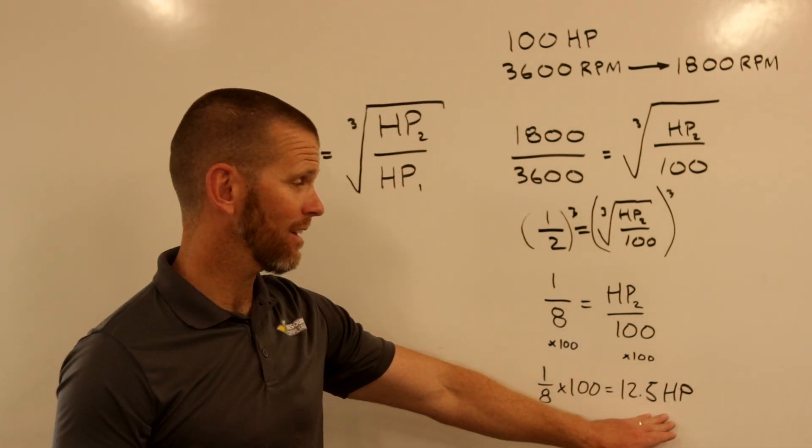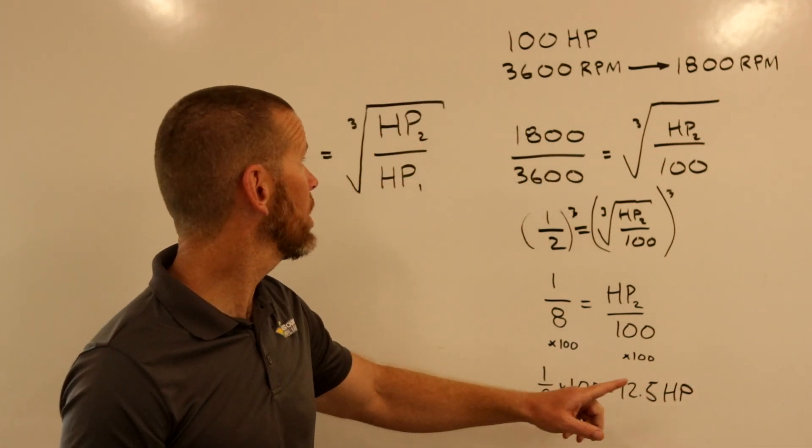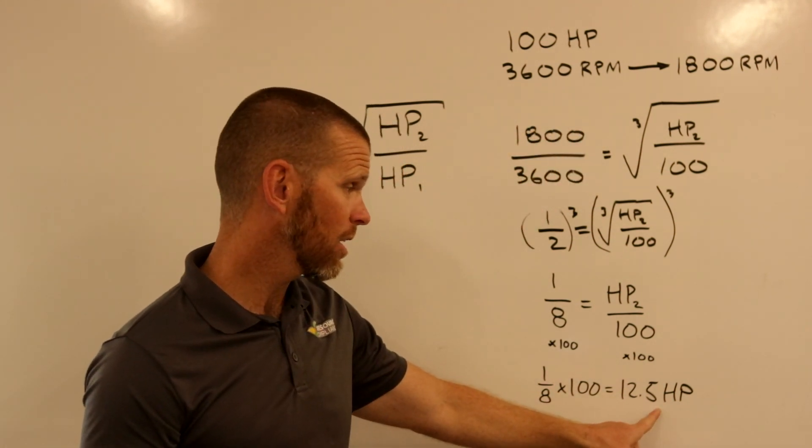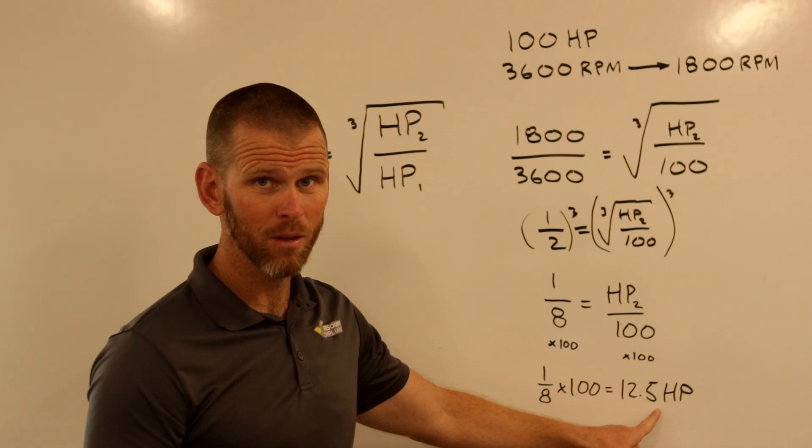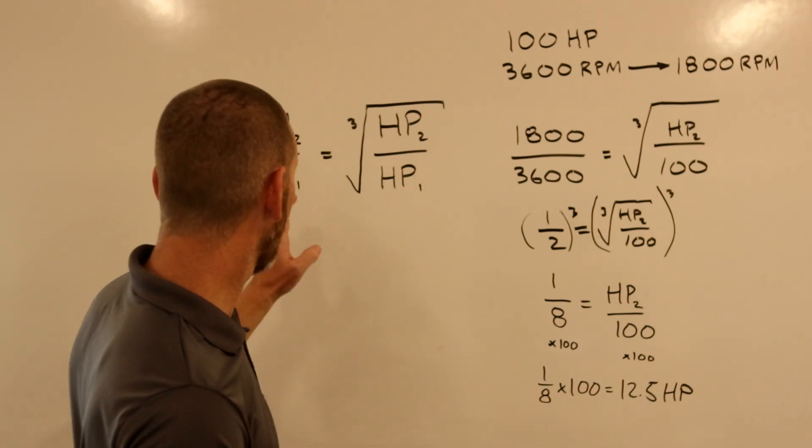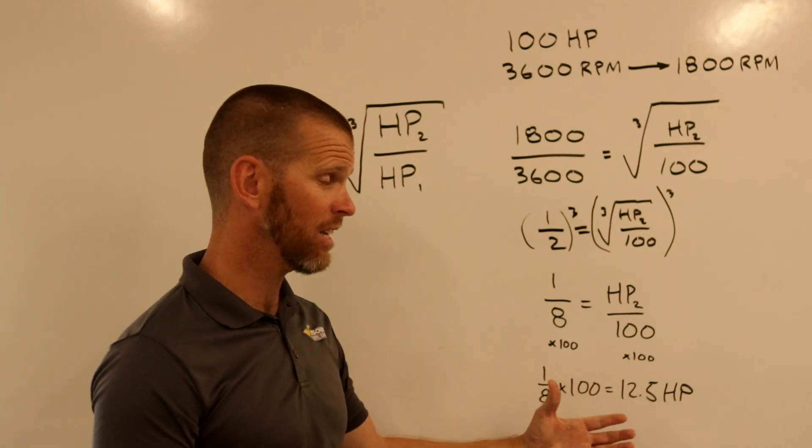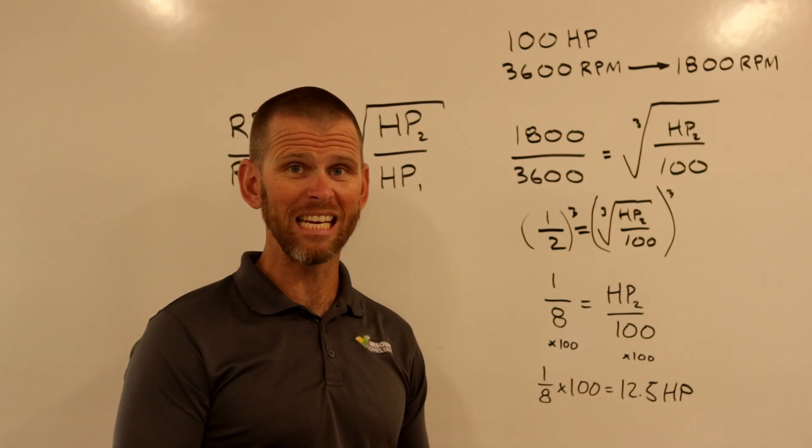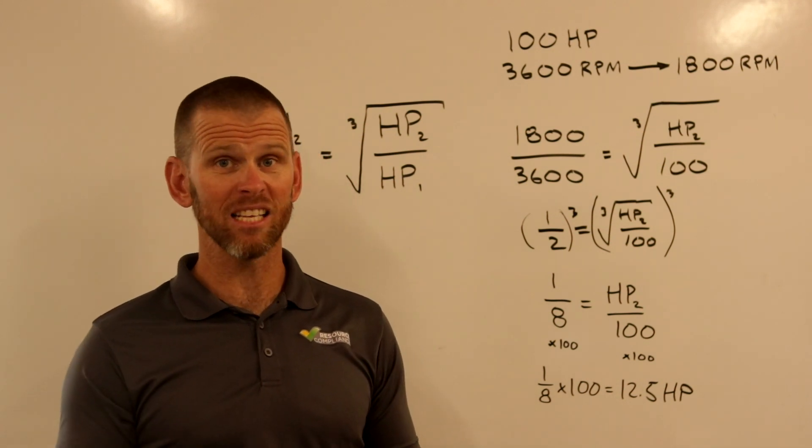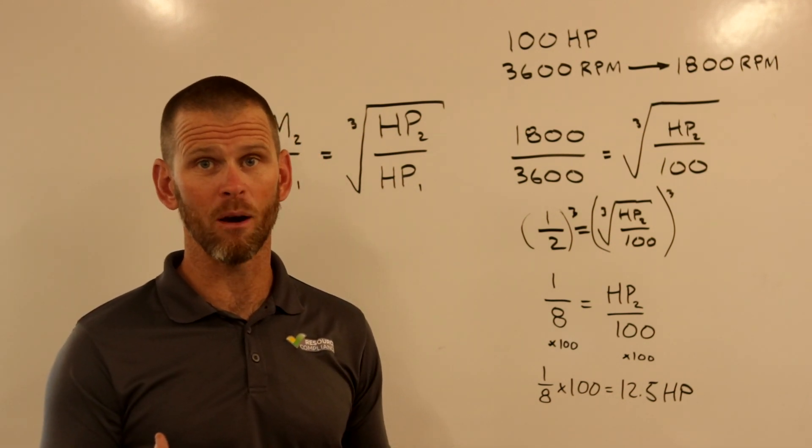So that is stunning. By lowering our speed by 50%, we reduced our power consumption to one eighth of the original power consumption. Our 100 horsepower motor is only utilizing or only needing to use 12 and a half horsepower. So there will be significant energy savings, cost savings in operating that way.